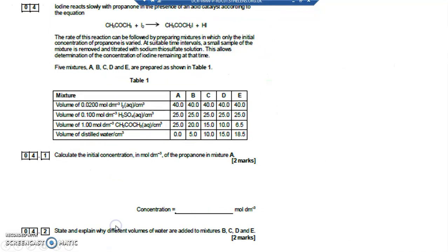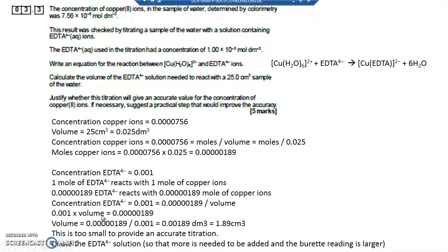This is too small to provide an accurate solution. Justify whether this titration will give an accurate value. It's too small really. 1.89 cm3 is way too small to do a titration with. And so what you need to do is you need to dilute the EDTA so that you get the same amount of moles but in a larger volume. So when you run it out of the burette you get a larger volume coming through, and then that would be easier to read from the burette.